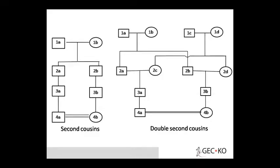Second cousin means our grandfather's brother's offspring — the generation under his relationship. Third cousin is from a more distant branch. So this gives us first cousin, second cousin, third cousin, fourth cousin. A union between real brother and sister is not seen in any country. If there is a relationship between cousins, that is known as consanguinity.